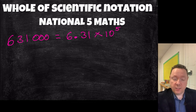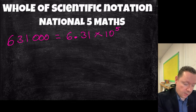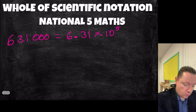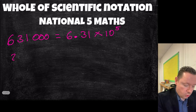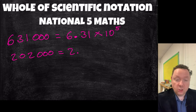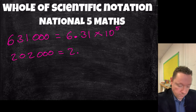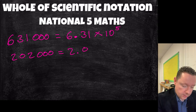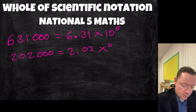I can do it again with another big number. Let's say we had 202,000 — then that would be 2.02 times 10, and again counting the numbers after: 1, 2, 3, 4, 5 — so it's times 10 to the power of 5.